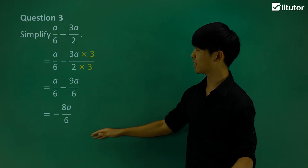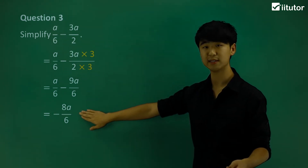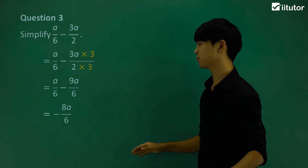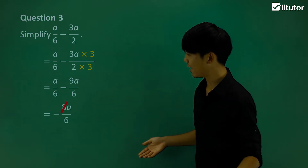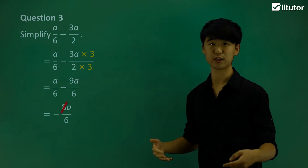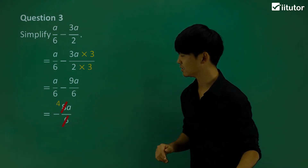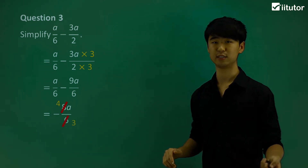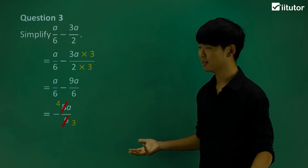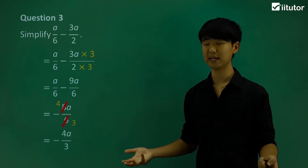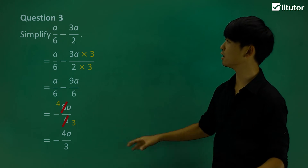Now let's go back to the question — we need to simplify further. I'm going to cancel my 8 down to a 4, while I cancel my 6 down to a 3. So my final simplified answer is negative 4a over 3. That was question number 3.